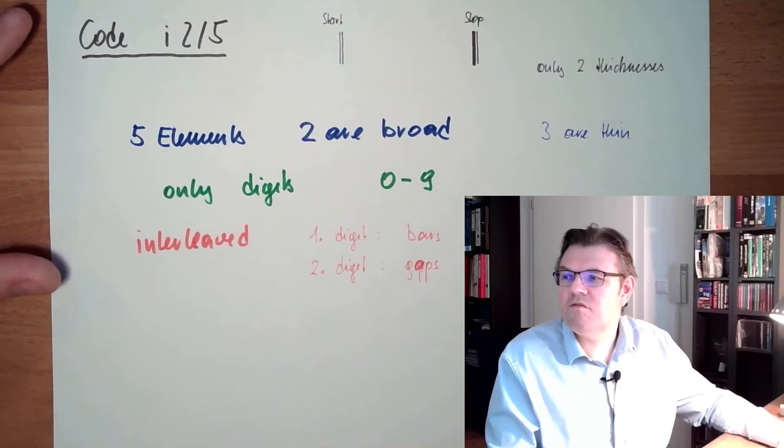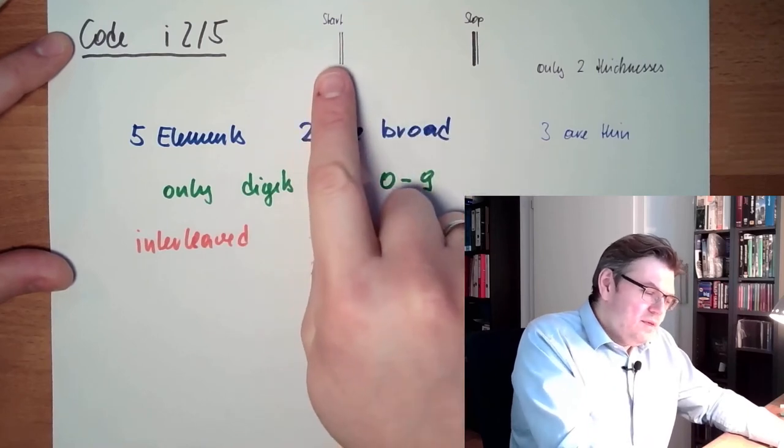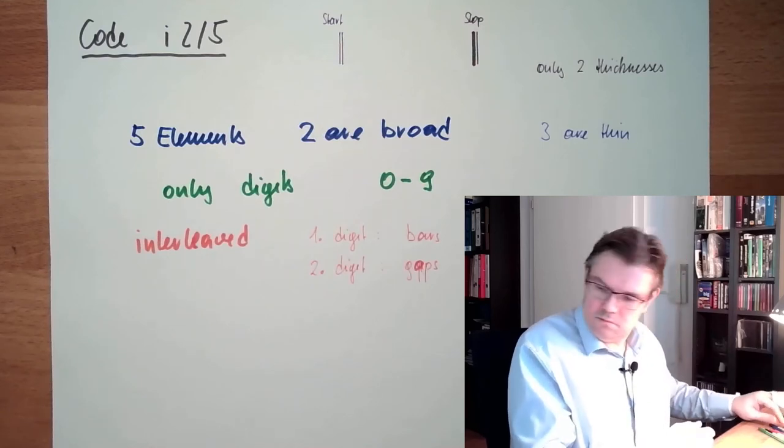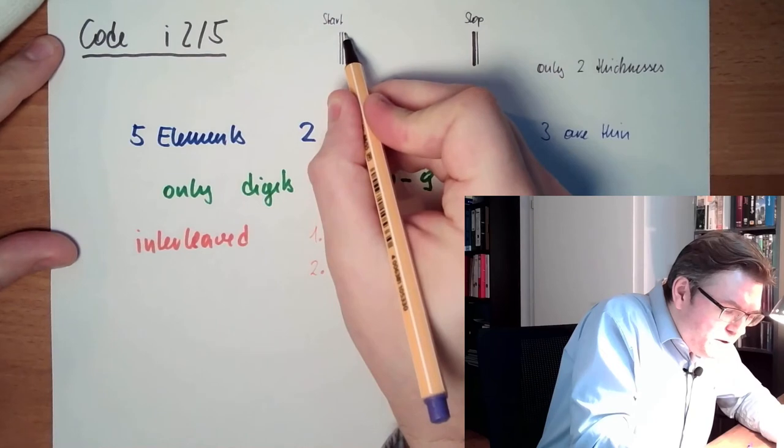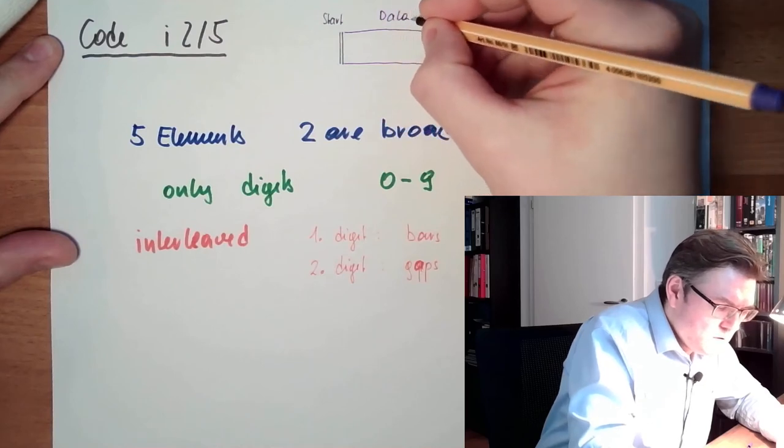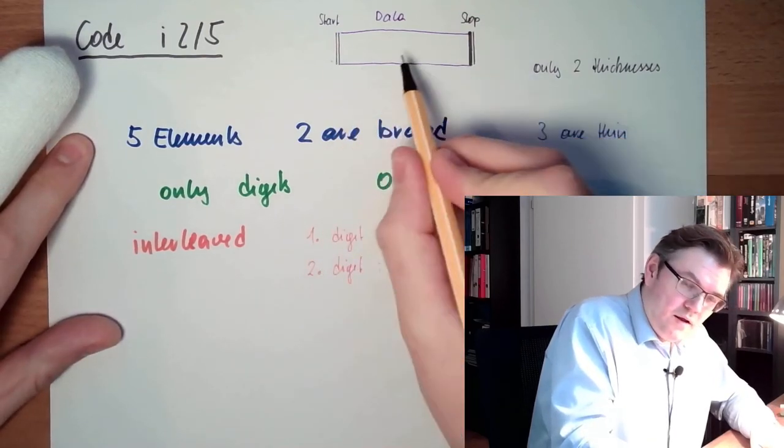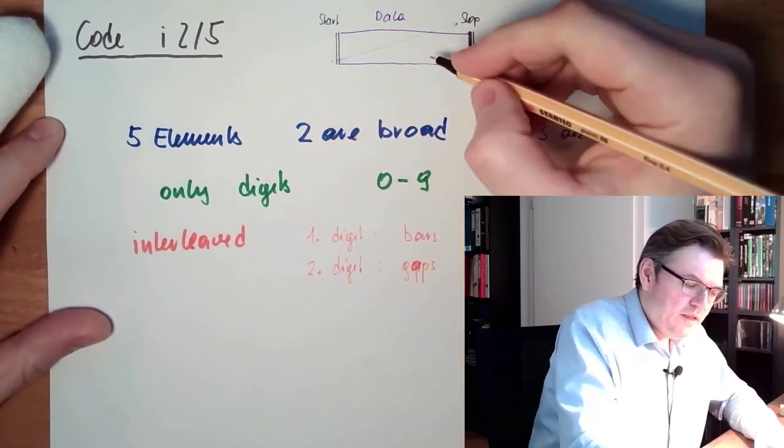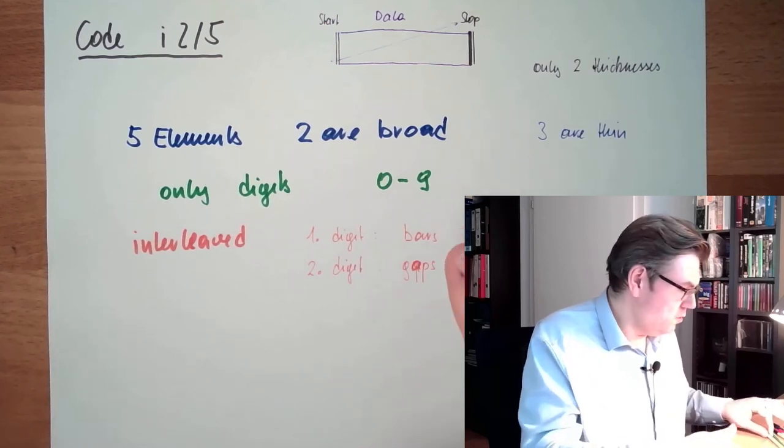There is an issue that we might scan it. You know, here is then the data area. I will also draw it. In between, we have the data area with the patterns. And the issue is if we scan it not in this correct order but a little bit like this, we might end up in the situation where we read at the end the stop sign and make a false reading.